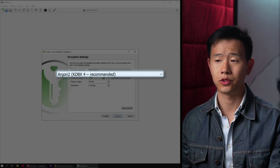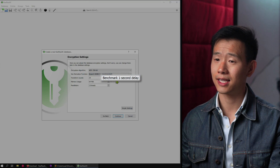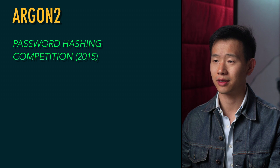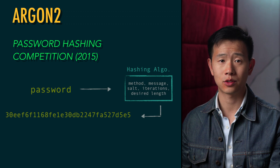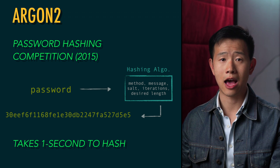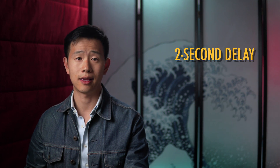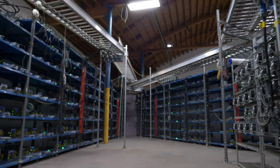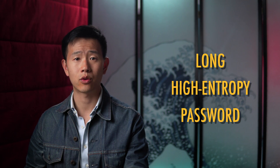We'll use Argon2 to hash your master password and benchmark a one-second delay for your computer. Argon2 is incredibly strong and was the winner of the password hashing competition in 2015. A hashing algorithm turns your plaintext password into a unique, fixed-length key that can be used for encryption. A one-second delay means it takes the algorithm one second to generate the hash — if you're using a password of 80 bits in strength, this means 2 to the 80th seconds, or 3.8 quadrillion years to brute force. A two-second delay doubles that. Obviously if your database is stolen and attacked on a cluster of specialized hardware, this cracking time goes down significantly — that's why you need a long, high-entropy password and can't rely just on a hashing algorithm.